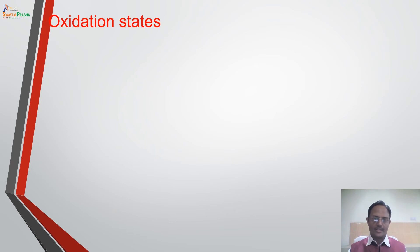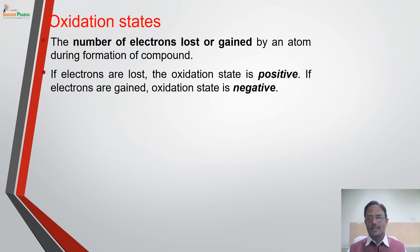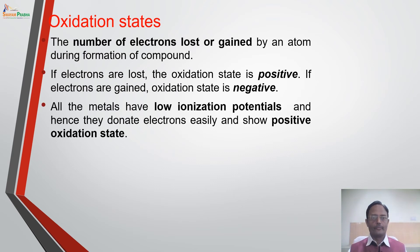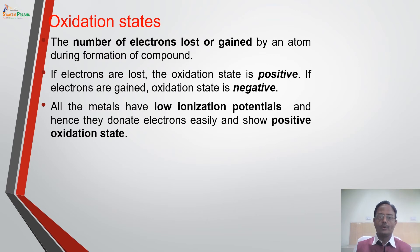Now, oxidation states of these elements — another property of 3D series elements. What is oxidation state? It is the number of electrons which are lost or gained by an atom during formation of a compound. If electrons are lost, the oxidation state is positive; if electrons are gained, the oxidation state is negative. All metals have low ionization potentials, and since 3D series elements are also metals with low ionization enthalpies, it is easy to remove electrons and they have a tendency to show positive oxidation states.